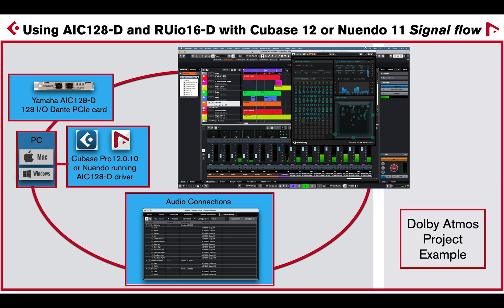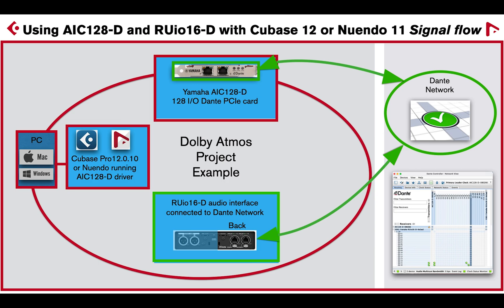By connecting the Yamaha RU-IO 16D audio interface to the same Dante network as the AIC-128D card, you can easily transmit signal from the AIC-128D card to the receiver RU-IO 16D channels 15 and 16, using Audinate Dante Controller software.